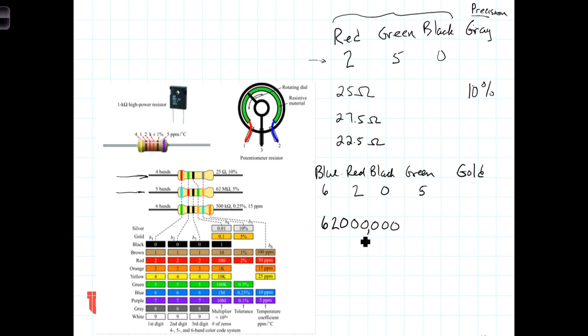Put some commas in here just to make it a little bit easier to read. And we see that what we have here is a 62 million-ohm resistor, or sometimes would refer to it as a 62 mega-ohm resistor. The gold band here tells us that it's a 5% resistor. So the value of this resistor would be 62 mega-ohms plus or minus 5%.